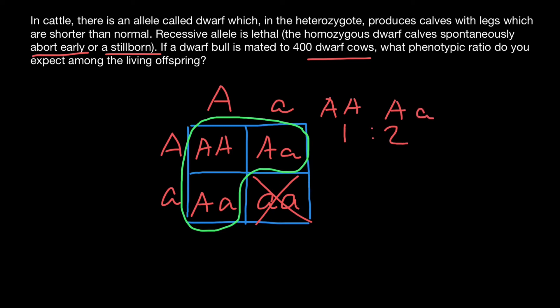We are not going to see this homozygous recessive genotype at all. So we would see only two phenotypes: normal size and dwarf.